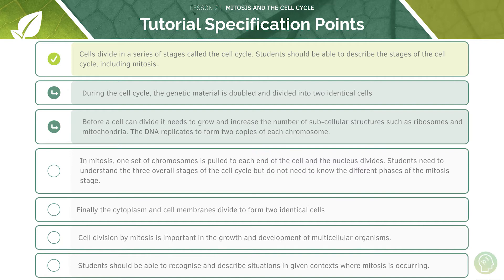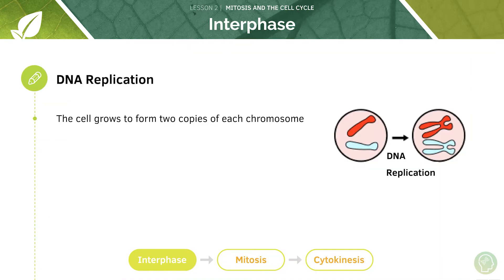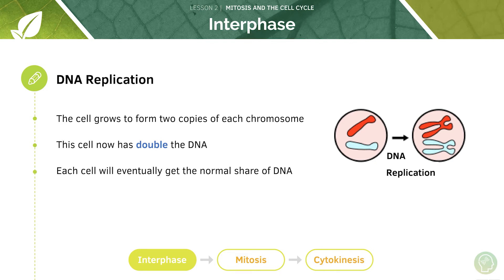In interphase, the genetic material is doubled, and then the cell splits into two identical daughter cells. Interphase is actually the longest stage of the cell cycle — it takes up the majority of the cycle because the cell undergoes so many changes. This involves DNA replication, because the cell has to double its amount of DNA so that it can distribute it between its daughter cells, as well as cell growth and production of new organelles.